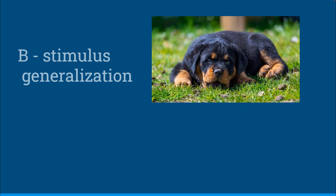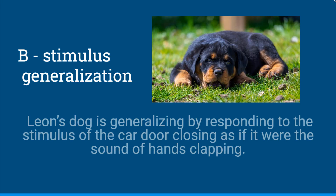And this would be B, stimulus generalization. Leon's dog is generalizing by responding to the stimulus of the car door closing as if it were the sound of hands clapping.